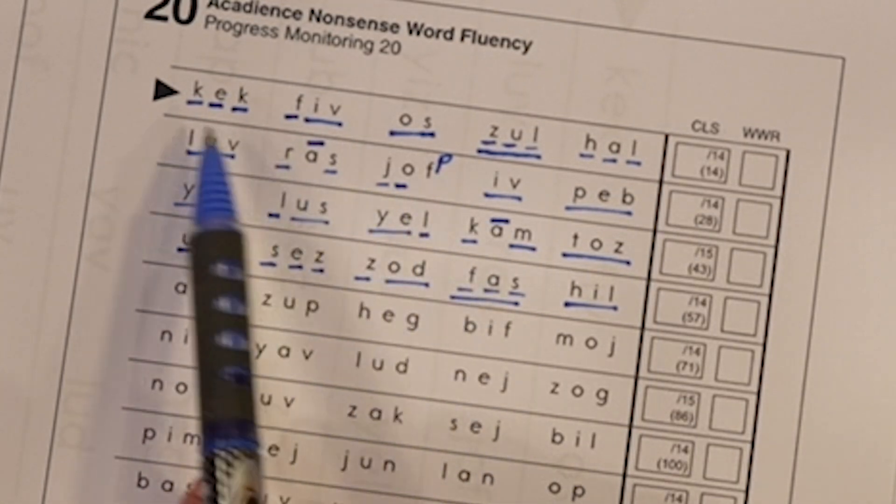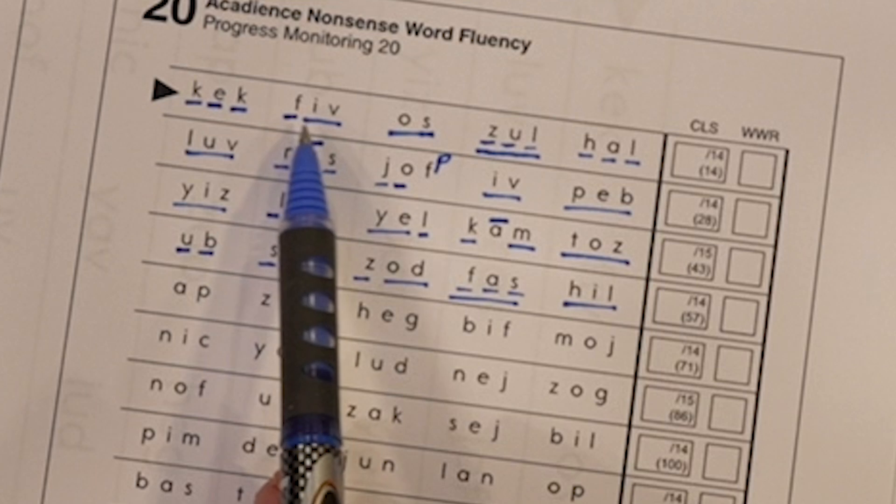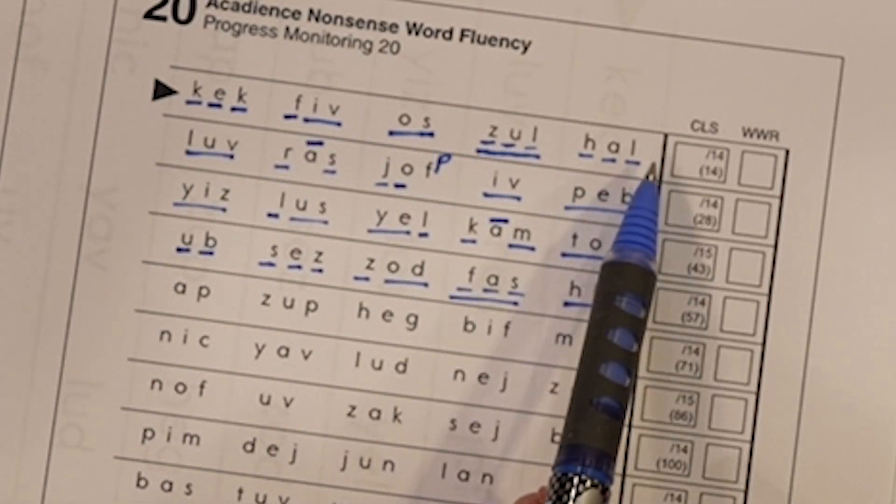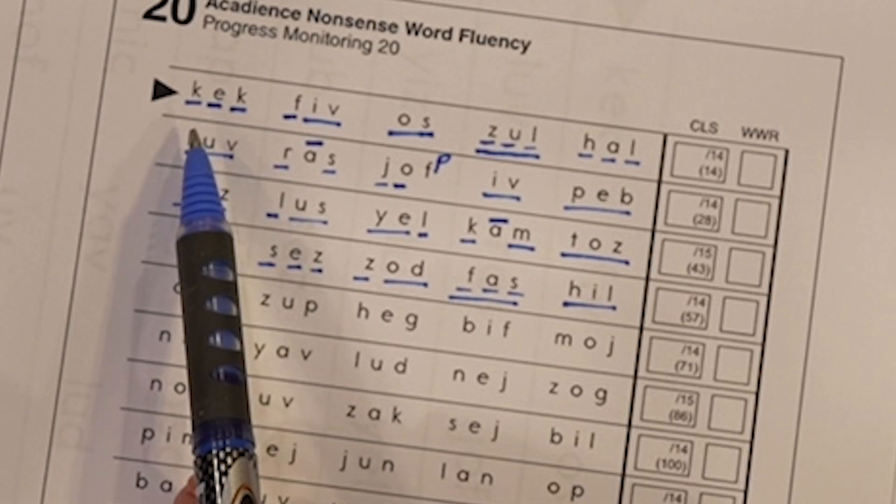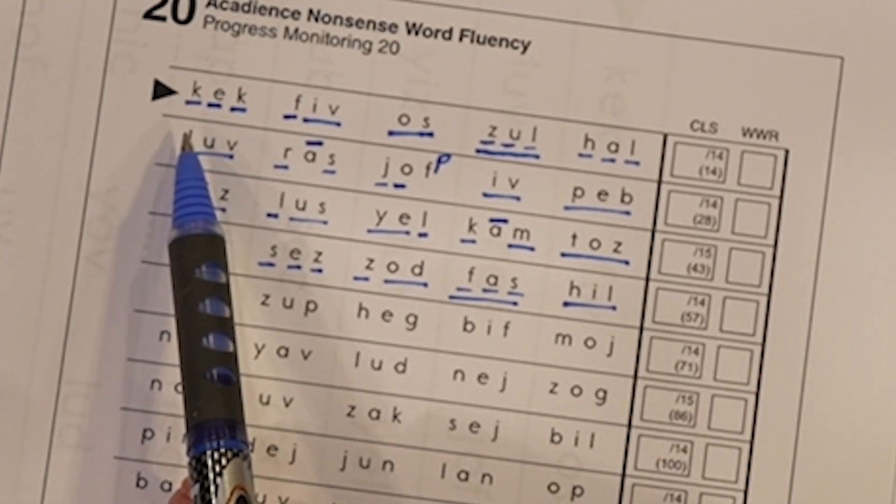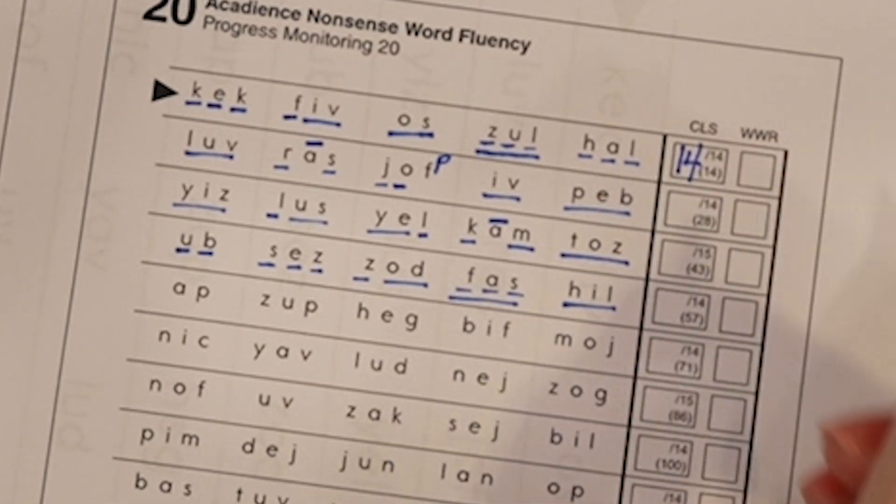But up here, they might have blended some together and some were separate, but they are all there. So if they are underlined in any way, we give them full credit for that. We got all 14 correct letter sounds.